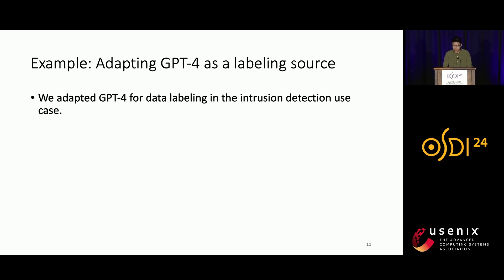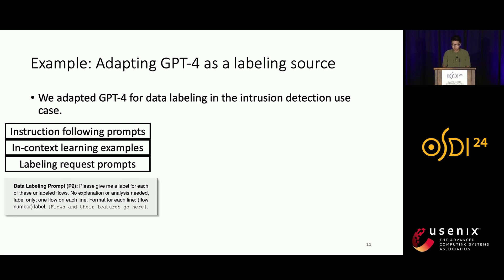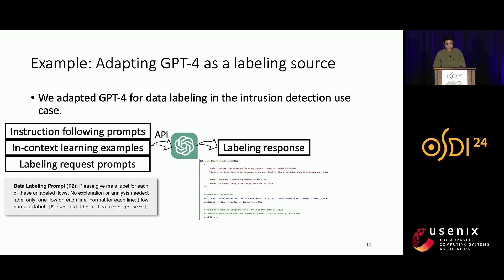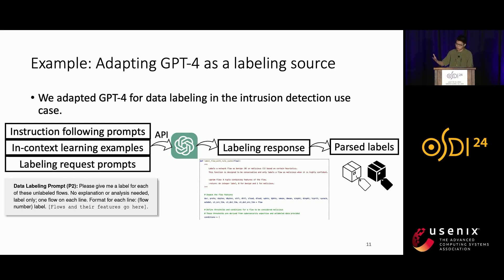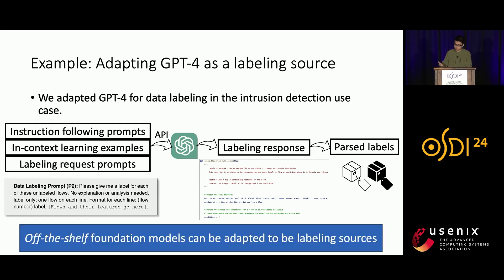As a case study, we adapt an off-the-shelf foundation model, GPT-4, for data labeling in the intrusion detection application. We compose prompts to make sure the LLM can understand our input data format and follow our instructions to produce labels. We create a labeling request as a composed prompt and send it through the GPT-4 API service, obtain the response, and parse it for labeled data. This shows that off-the-shelf foundation models, even without fine-tuning on domain-specific data, can follow our labeling instructions to serve as good labeling sources.